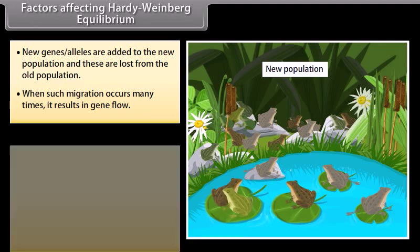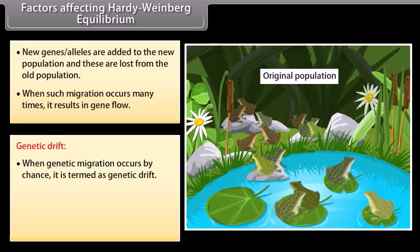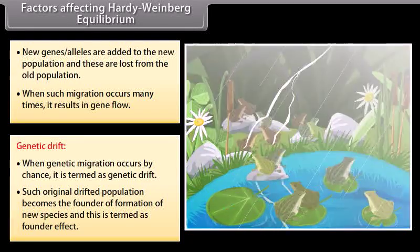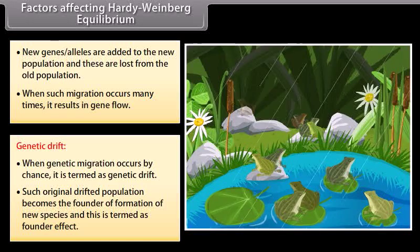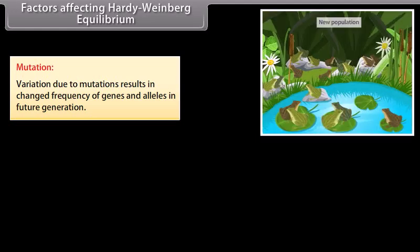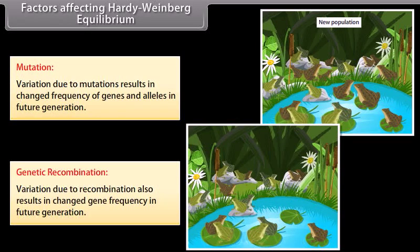Genetic drift occurs when genetic change in a population happens by chance; such an original drifted population becomes the founder of a new species, and this is termed the founder effect. Variation due to mutation results in changed frequencies of genes and alleles in future generations. Variation due to recombination also results in changed gene frequency in future generations.